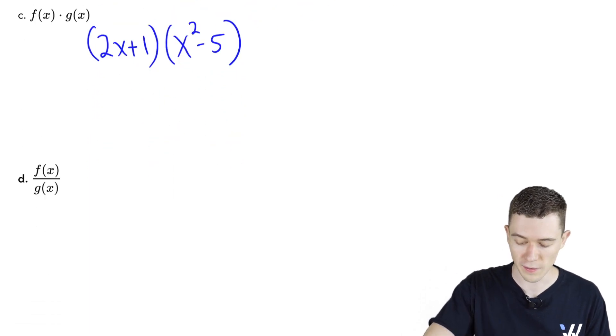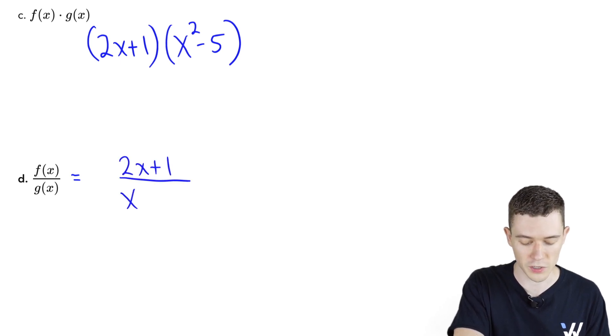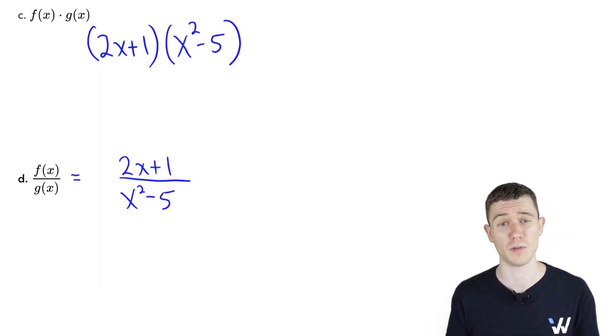f over g, f divided by g, works nearly the same. We'll just take the f function, 2x plus 1, completely over the g function, x squared minus 5, and that's the new function, f over g.